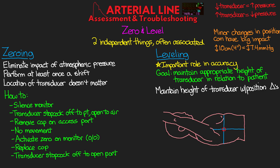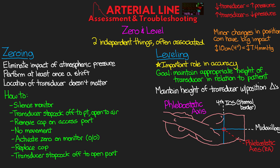The place where we do the leveling is called the phlebostatic axis. For a supine patient, this landmark is the fourth intercostal space at the sternal border and mid-axillary line — the physiological marking of the level of the right atrium. For the arterial line, we want the same height as the aortic root, where the aortic valve and aorta meet. Fortunately, the right atrium and aortic root are at similar heights. We typically attach the transducer to an IV pole to prevent accidental movement.